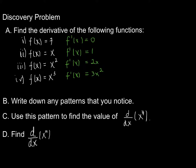If you look at the results, you probably see some patterns. x cubed became 3x squared; x squared became 2x to the first; x to the first became 1x to the 0, with x to the 0 being 1. You also found that if you have just some constant function — 7, for example — the slope of that function is always 0 because it's a horizontal line. So any constant function, any horizontal line, has a derivative of 0.